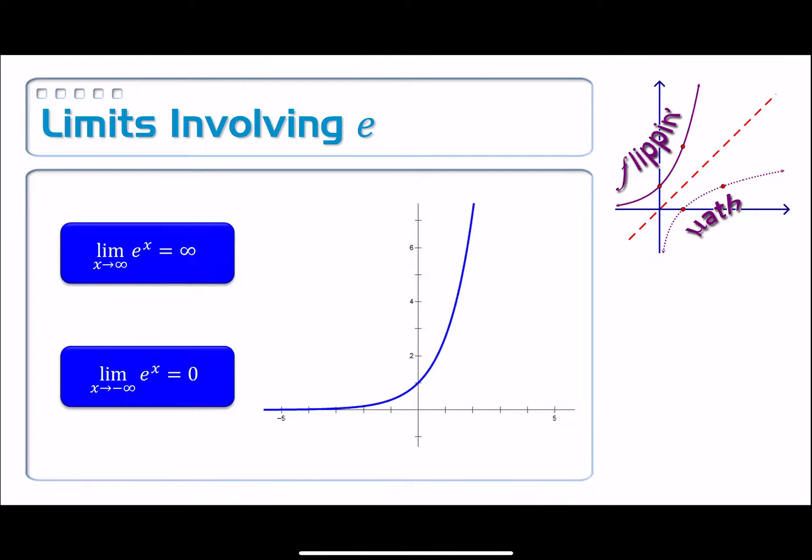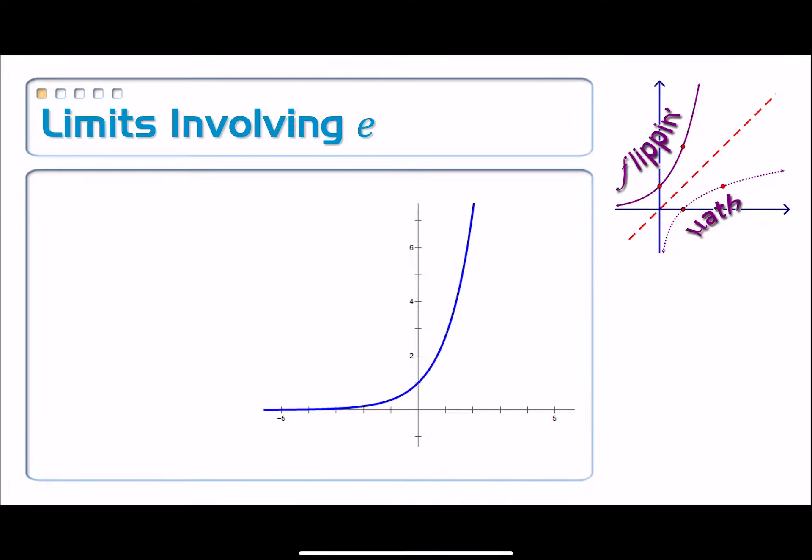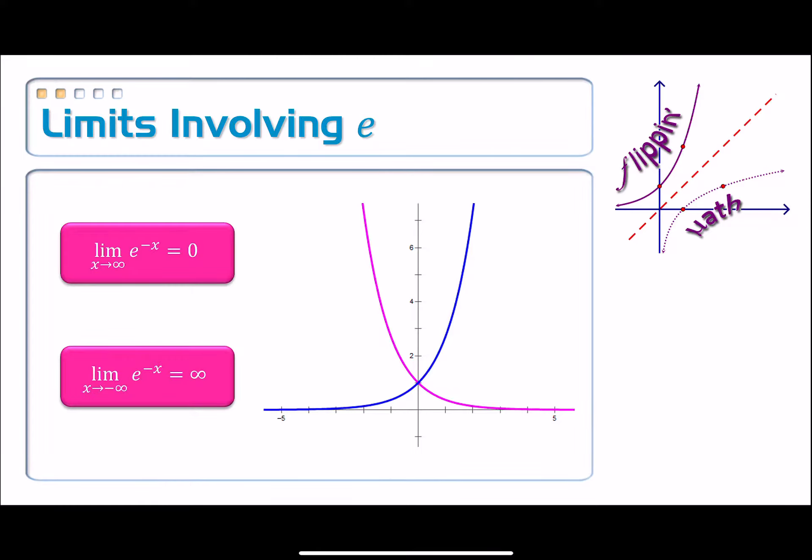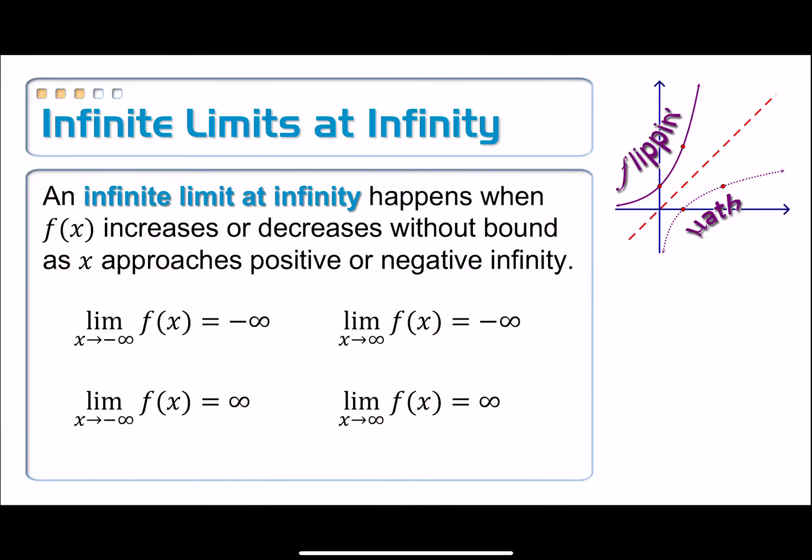All right, I'm going to switch it up just a little bit here. What if I talked about instead e to the negative x? Well, e to the negative x is just the reflection of the blue graph over the y-axis. It looks like this. And now whenever I take these limits, the limit as x approaches infinity of e to the negative x, I can see that that's going down to zero. And then if I take the limit as x approaches negative infinity of e to the negative x, I can see in the graph that that's going up to a positive infinity.